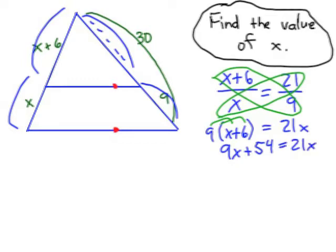Let's go ahead and move the 9X to the other side. In other words subtract 9X from each side and that will give us 54 equals 12X.